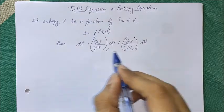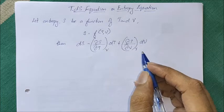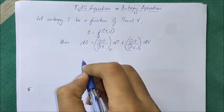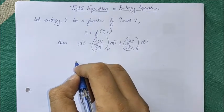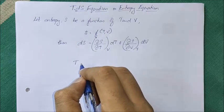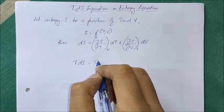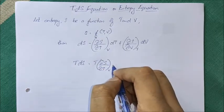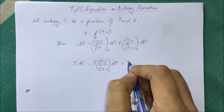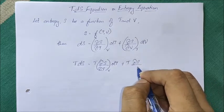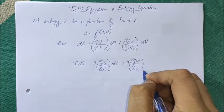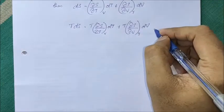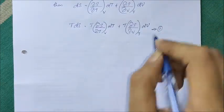Now I am going to multiply this expression throughout by the term T. So T·dS is equal to T·(∂S/∂T)_V dT plus T·(∂S/∂V)_T dV. I am calling this expression as Equation 1.